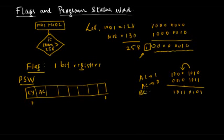The auxiliary carry flag plays a very important role in BCD arithmetic — we will see it in detail when we cover BCD arithmetic. For now, just know that auxiliary carry flag is set when there is a carry from the lower nibble to the higher nibble. The next flag is F0, which is a user-defined flag. If the programmer wants to store one bit of data in the PSW, they can do so using F0.